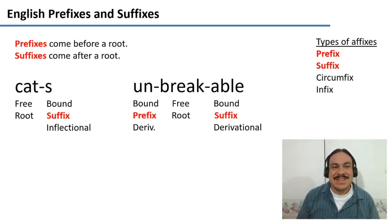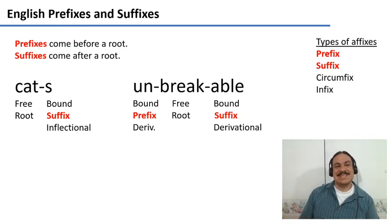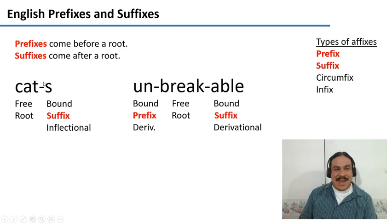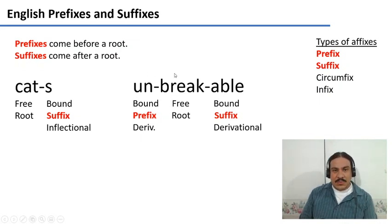You know English. English has prefixes and suffixes. For example, in 'cats,' there is an affix that's a suffix because it comes after the root. In 'unbreakable,' we have one prefix that comes before the root and one suffix, '-able,' which comes after the root.